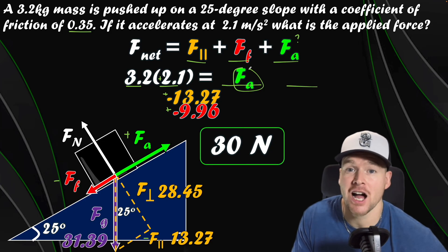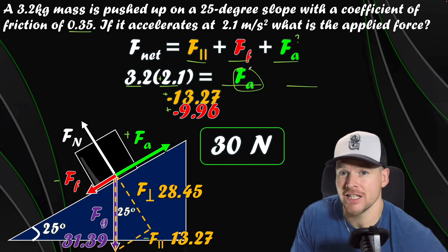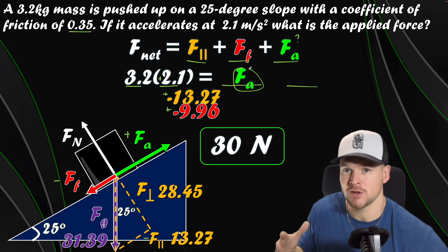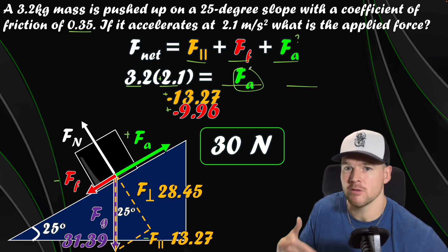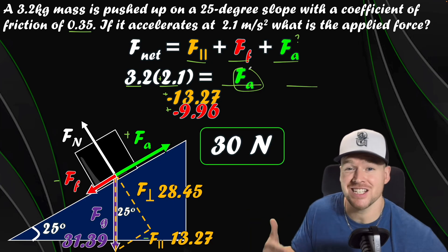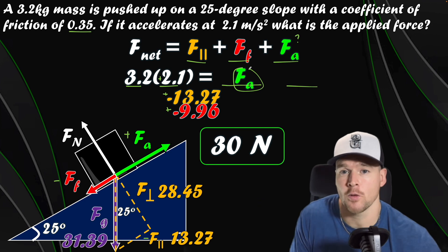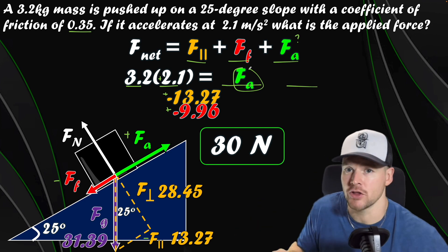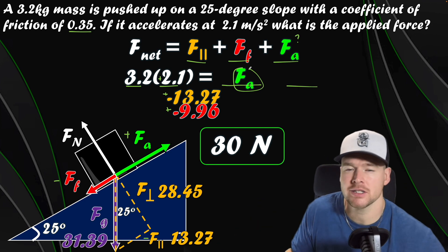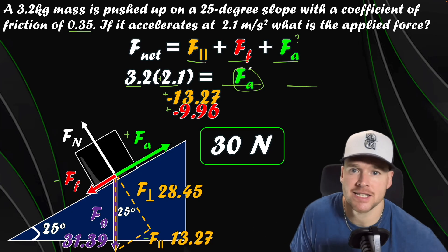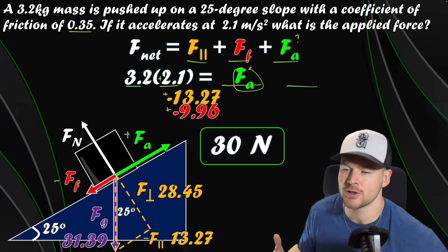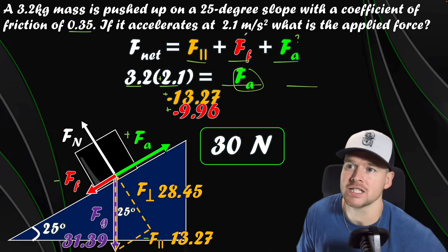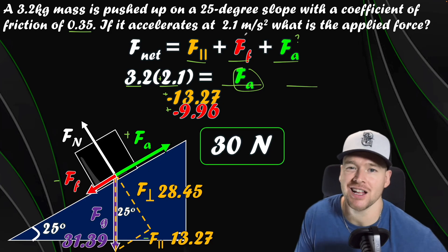Moving the 13.27 and 9.96 over to the other side and adding them gives a nice rounded applied force of 30 newtons. Hopefully that shows how we just add one more force each time to the F-net formula. They're really not that bad since you're only breaking FG into its components, and that should be your first step as soon as you see any inclined plane question.